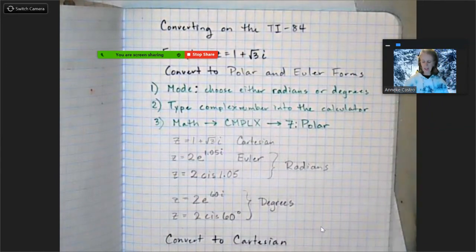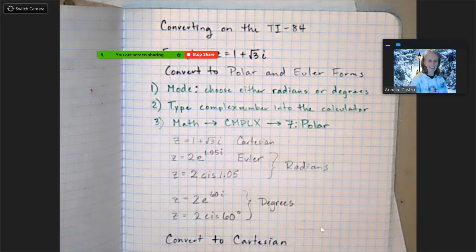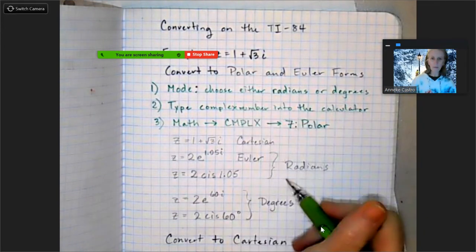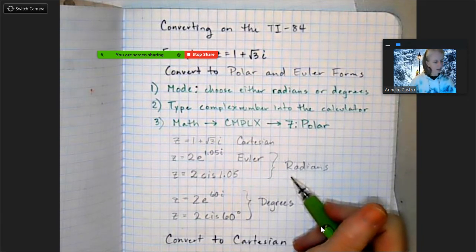Alright, I just made a video and that's why this is already written out, but then I started coughing and decided I better just start over. So we are going to do converting between Cartesian, polar, and Euler forms of our complex numbers using the graphing calculator. It's really super easy.